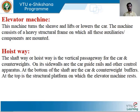The next component after the counterweights is your elevator machine. This machine turns the sheave or the pulley and lifts or lowers the car. The machine consists of a heavy structural frame on which all the components or auxiliaries are mounted. It could be an ISMB or ISMC — structural members which are used for the framing purpose.